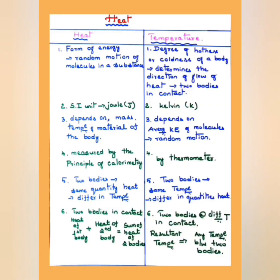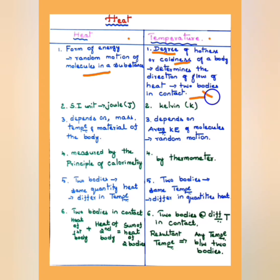Learning about heat and temperature simultaneously, we will also check out their differences. Temperature is the degree of hotness or coldness of a body. When we say heat, it refers to the energy of random molecular motion, but temperature covers both hotness and coldness of a body. Temperature determines the direction of flow of heat between two bodies when they are in contact.